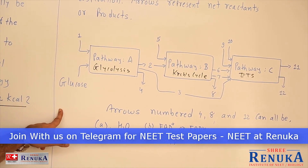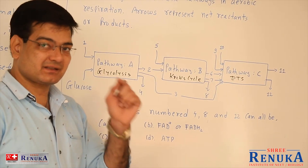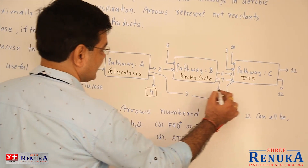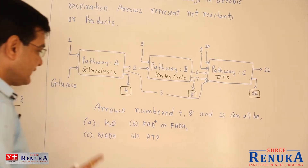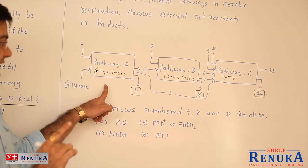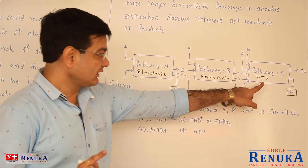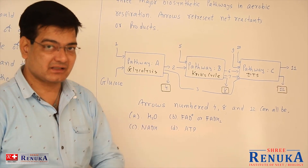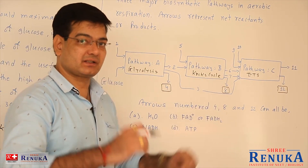The question asks what arrows number 4, 8, and 12 can all be — they must be the same in the case of the 4th, 8th, and 12th arrows. If we talk about water: water is formed in glycolysis but not in the Krebs cycle. In ETS, water molecules can be formed. But it is not clearly mentioned in the NCERT textbook that water molecules are a product of the Krebs cycle.